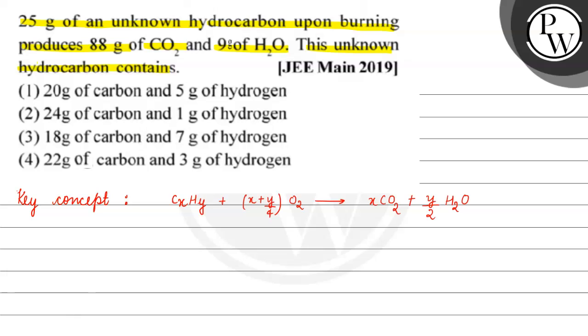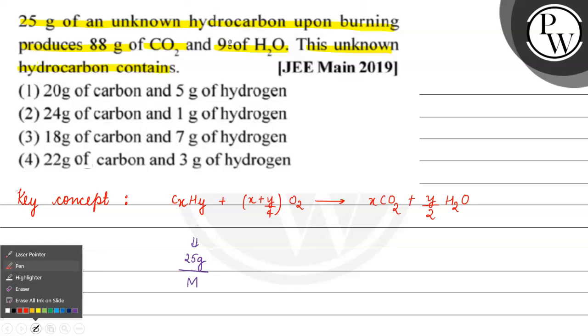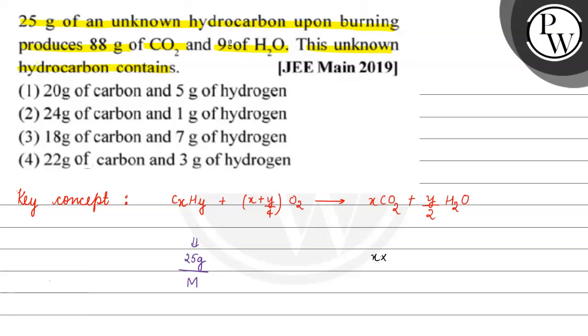If we work out our question, we're told 25 grams of unknown hydrocarbon, so this is 25 grams. If we divide this by its molecular mass, we get the number of moles. This is 1 mole we have, which will make x into 25 grams by m moles of carbon dioxide.